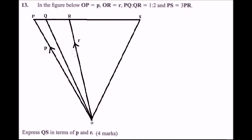This is question 13 of the 2018 Mathematics Paper 2. We have been given a diagram. We are told in the figure that vector OP equals p, OR equals r, PQ to QR is in the ratio 1:2.